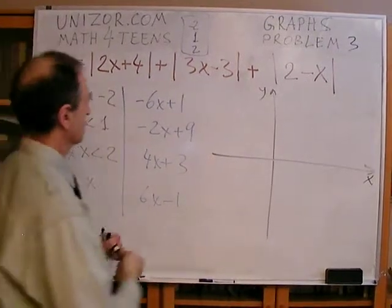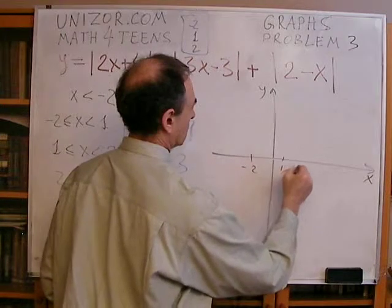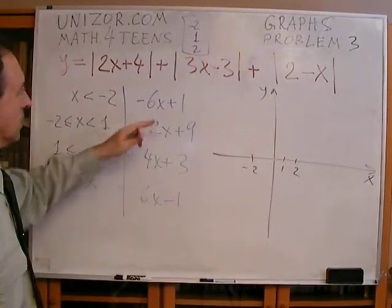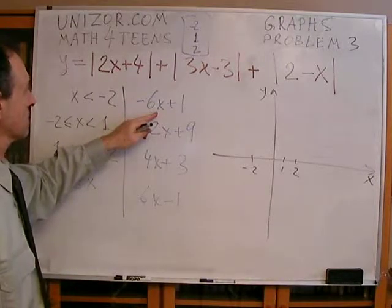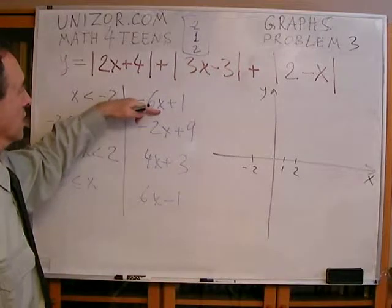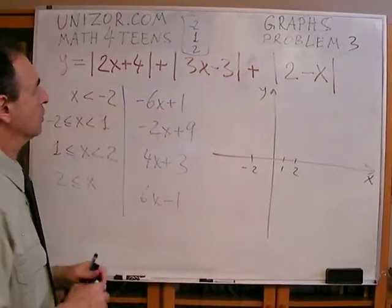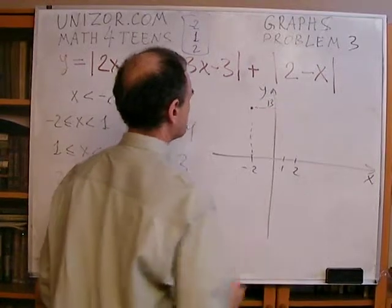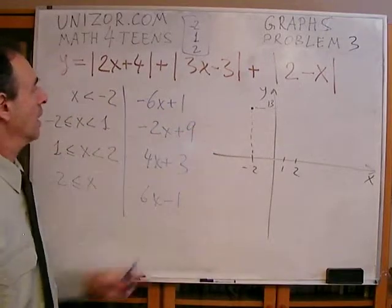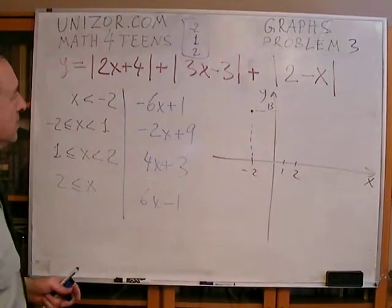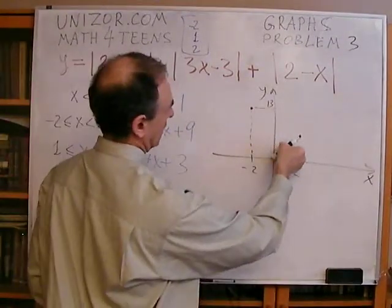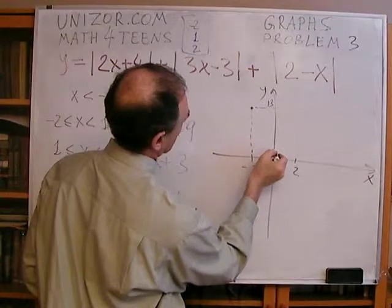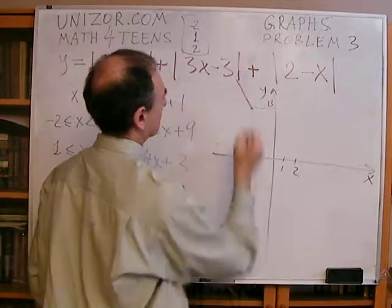We'll probably do it approximately, as you understand. So minus two, one, and two. Okay. Minus six x plus one. Again, let's calculate it on the critical point, minus two, which will be thirteen, right? So if x is equal to minus two, y is equal to thirteen. So this is where our piece is supposed to end. Now when it goes to minus infinity, minus six x plus one, x is like this, six x is like this, minus six x is like this, and plus one is this. So it's something like... This will be the line which we are interested in.